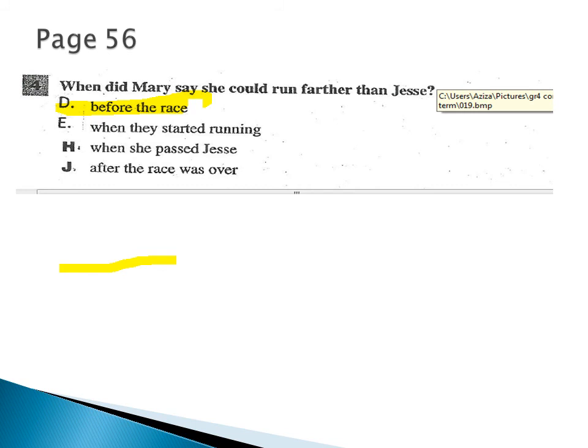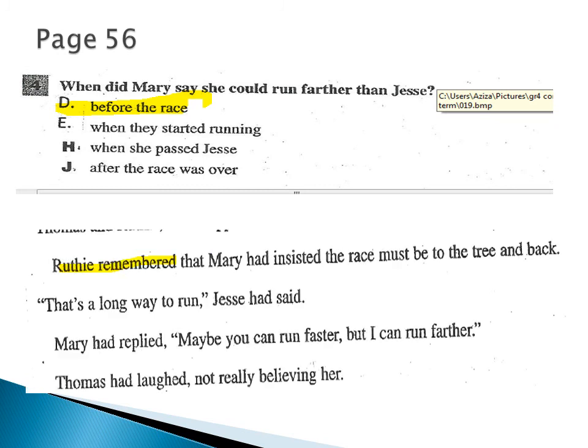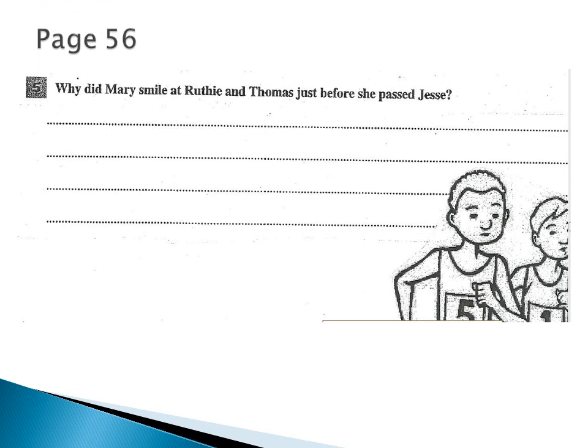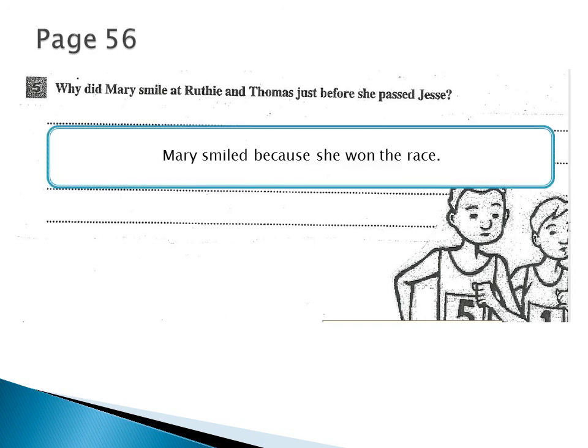Question four: when did Mary say she could run farther than Jess? Ruthie remembers that Mary had insisted the race must be to the tree and back — that's a long way to run, Jess had said. For the last question, why did Mary smile at Ruthie and Thomas just before she passed Jess? After she passed Jess, she was heading to the finish line — Jess was behind her and Ruthie and Thomas had already stopped. Mary was going to win the race, so she smiled because she was winning.